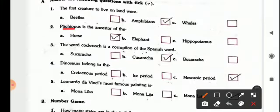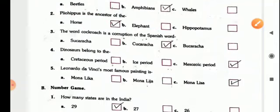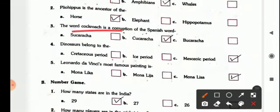Next is, Plyoepus is the ancestor of the horse, elephant, hippopotamus, it is horse. Now the word cockroach is a corruption of the Spanish word cucaracha, it is not cucaracha and not bucarcha, it is cucaracha.